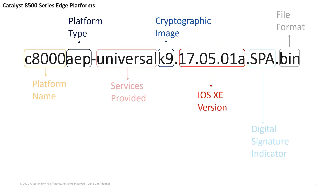Starting with the Catalyst 8500 series edge platforms, first we see that the platform name is indicated right in the front. AEP means aggregation edge platform, and as you'll see soon, BE could be placed here as well. Next is an identifier letting us know the services provided by this image. In this case, universal means that this image offers all the Cisco IOS features supported by the C8500 series edge platforms. Other examples of what could be placed here could be NFVIS or Advanterprise, just to name a couple.